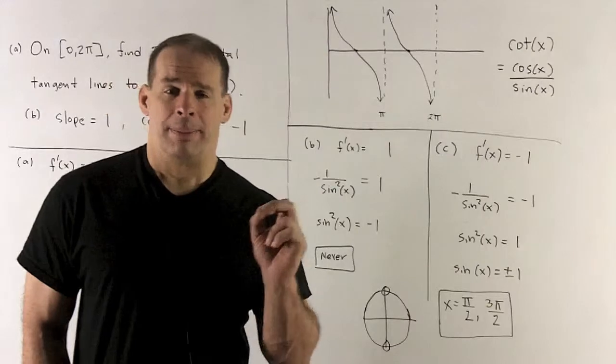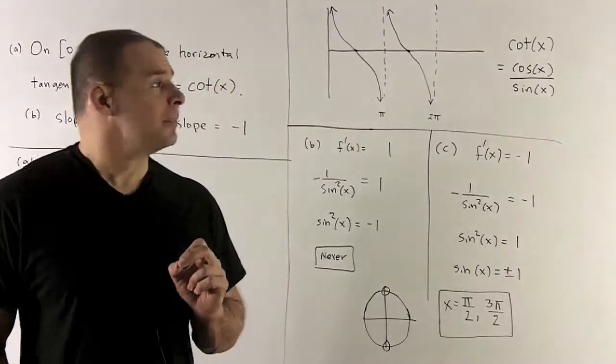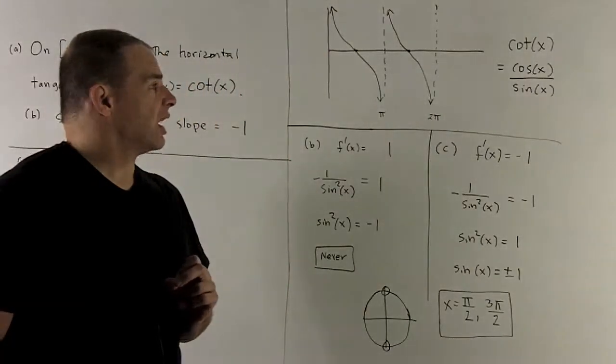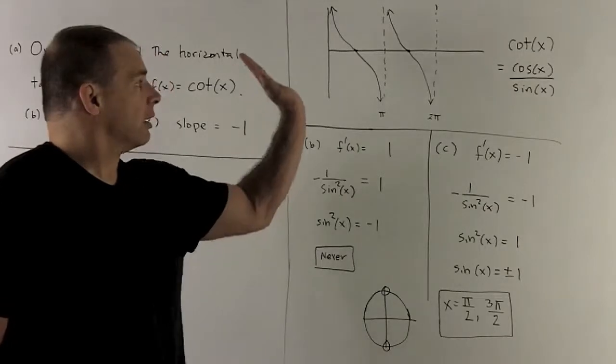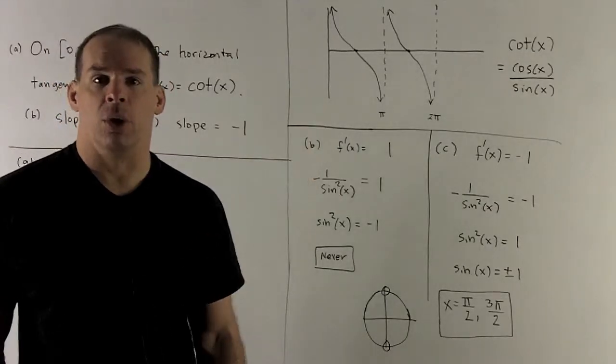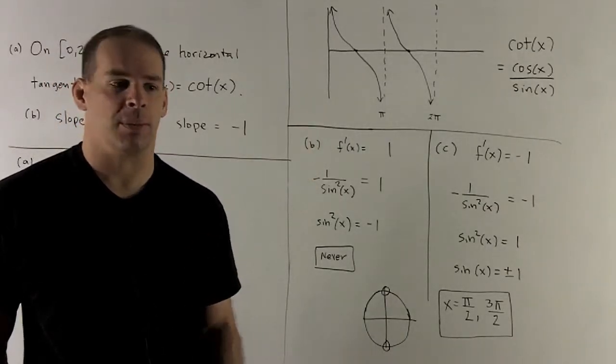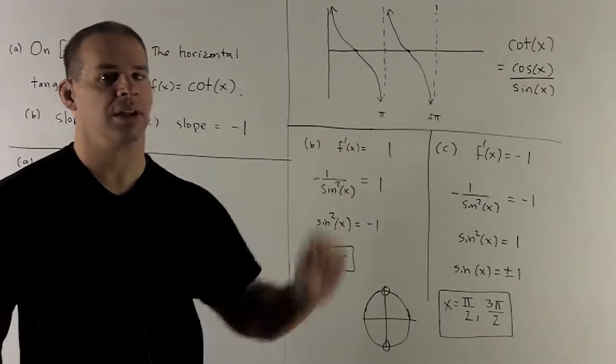If I take a look at our picture at pi halves and 3 pi halves, that's where we're hitting the x-axis. And you note, that looks like perfectly good candidates for slope being equal to minus 1, since minus 1 goes like this.